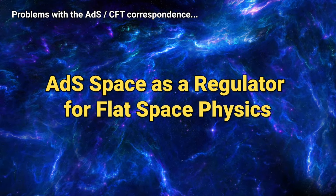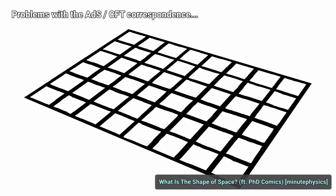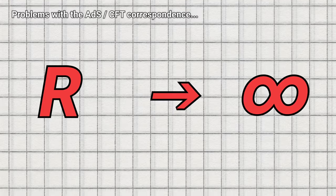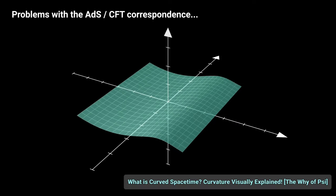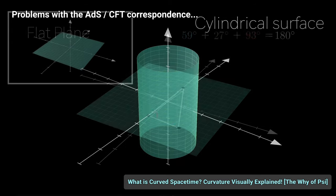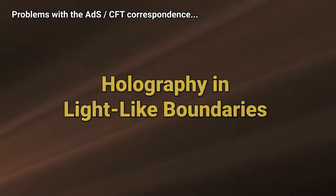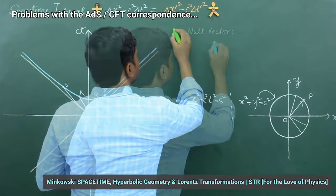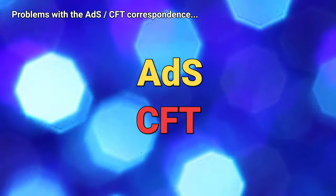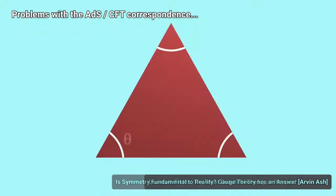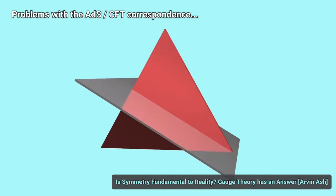Number two: ADS-space as a regulator for flat space physics. The use of ADS-space as a regulator to extrapolate to flat space physics involves taking the limit where the ADS radius of curvature R goes to infinity. This process, while keeping the local physics unchanged, isn't fully developed, especially in understanding how the ADS boundary conditions translate to flat space observables. Number three: holography in light-like boundaries. Understanding holography for light-like boundaries, as in the case of Minkowski spacetime, differs significantly from time-like boundaries typical of ADS-CFT. The existence and nature of large N limits for theories that aren't gauge theories and for theories with less or no supersymmetry isn't anywhere as developed either.